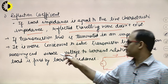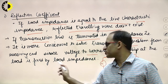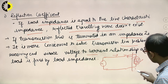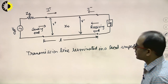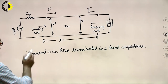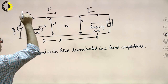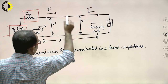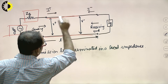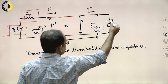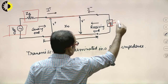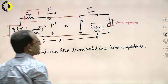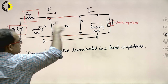It is more convenient to solve the transmission line problem from the receiving end, since the voltage-to-current relationship at the load is fixed by the load impedance. To calculate the reflection coefficient, it is easier to calculate it from the receiver end. Consider a transmission line with source impedance Zg, source voltage Vg, and load impedance ZL at the far end.